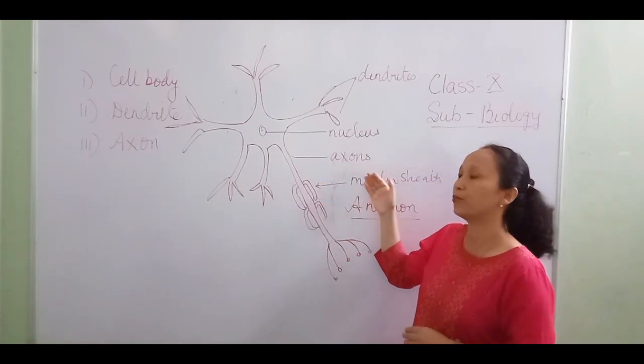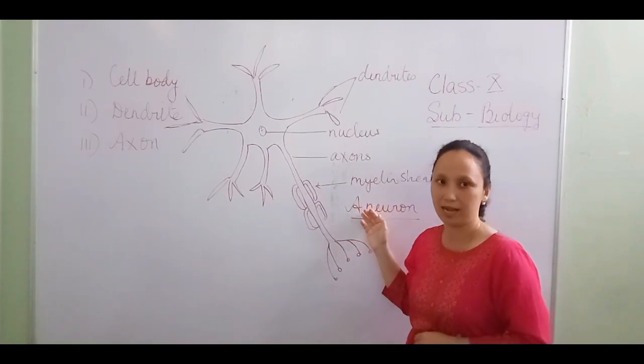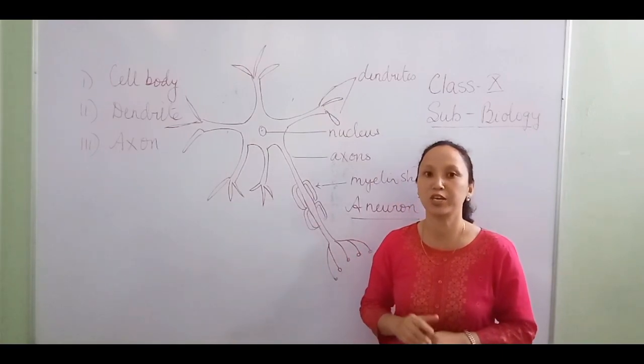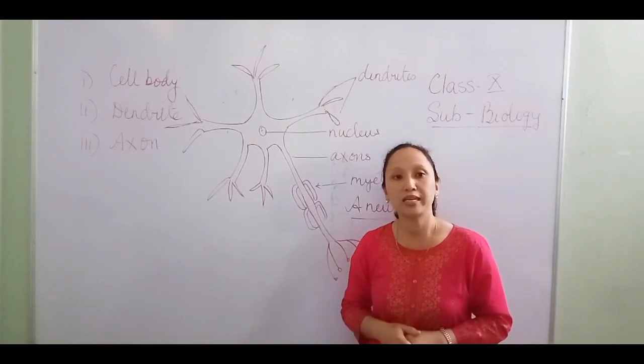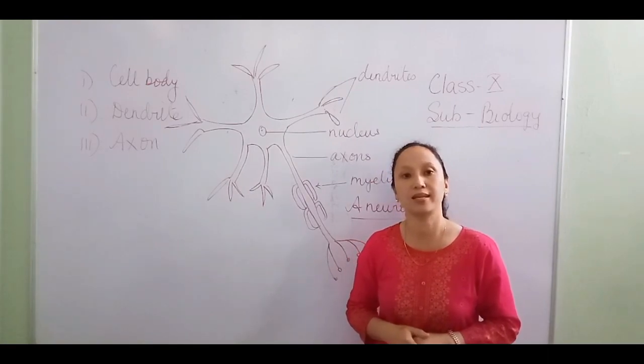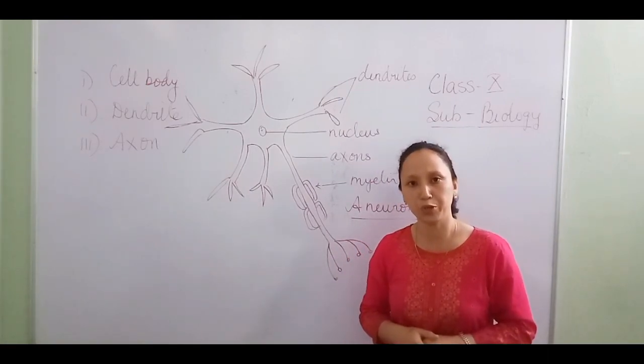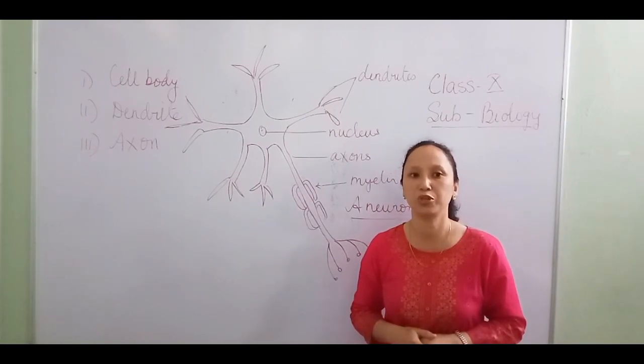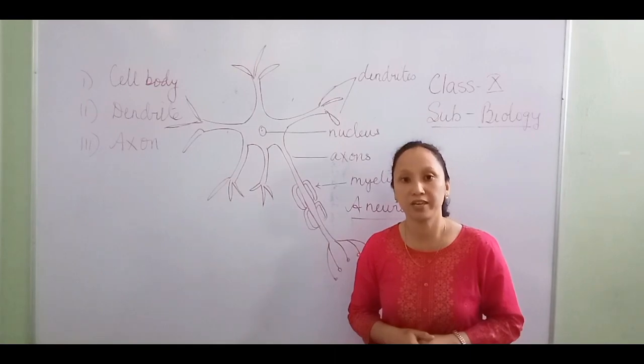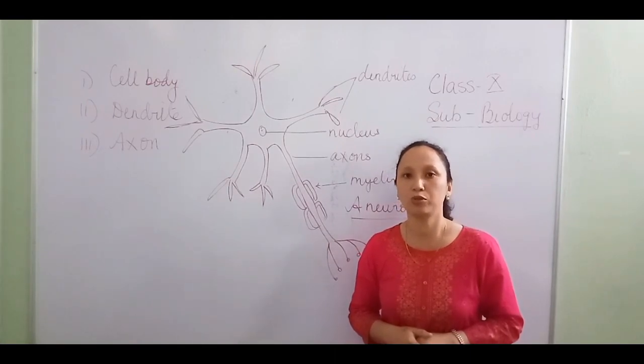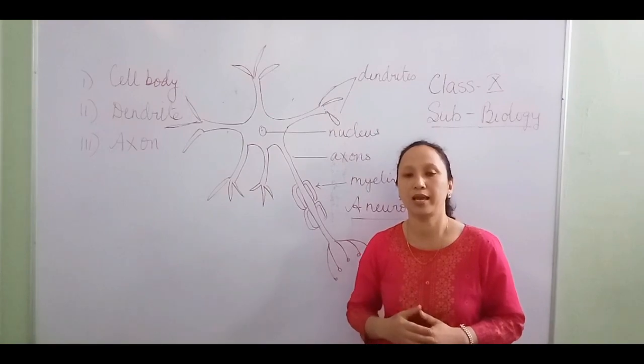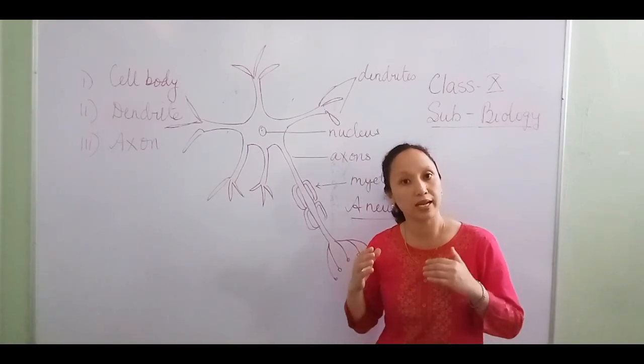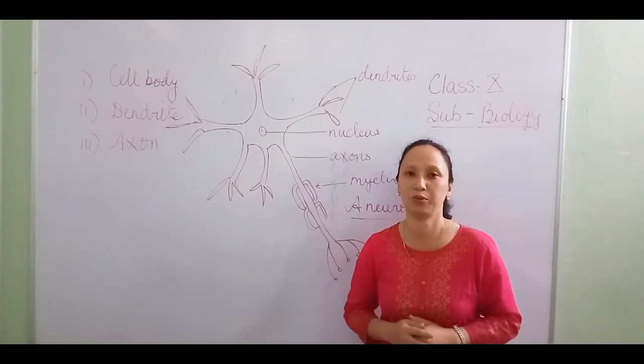So what I would like you to do now is in your book on page number 115, there is a diagram of a neuron. I would like you to draw this diagram in your biology notebook, label its various parts, and practice that diagram at least two, three, and to attain perfection four times, five times.